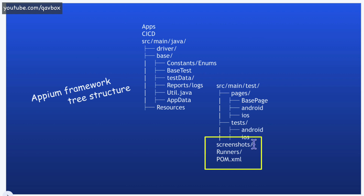Now let's talk about a couple of other folders. The screenshots folder is important — if your report attaches screenshots, when a test case fails you need to capture a screenshot and attach it to your HTML report. I keep a screenshots folder so all screenshots from that execution session are stored there. You can even create android and ios subdirectories inside screenshots, keeping them separate, and reference those paths when attaching to reports, keeping your folder structure clean and manageable.